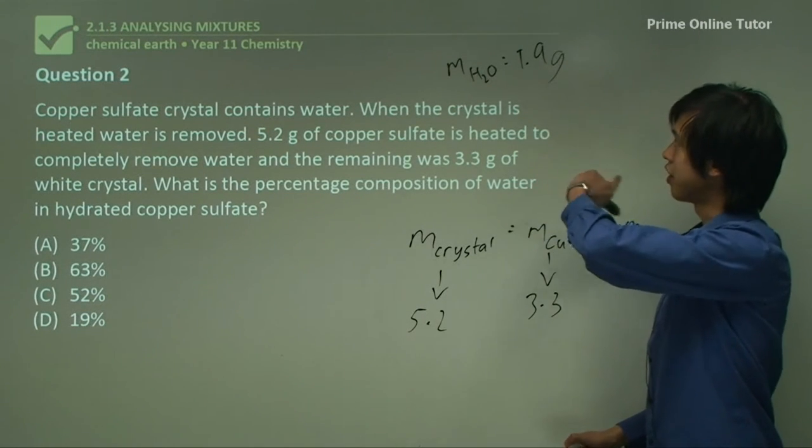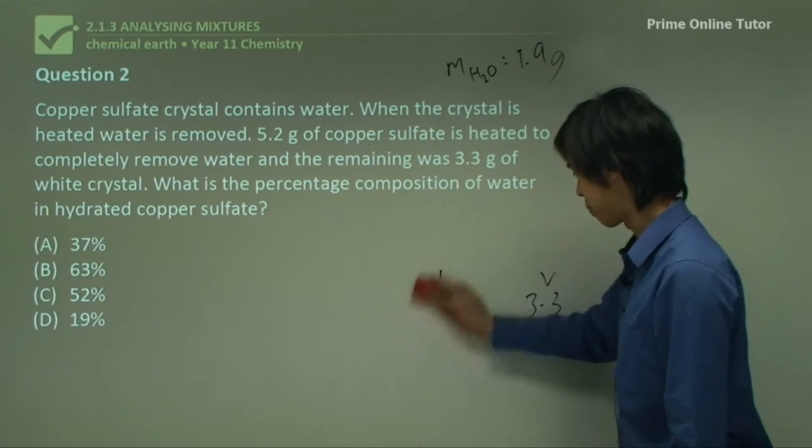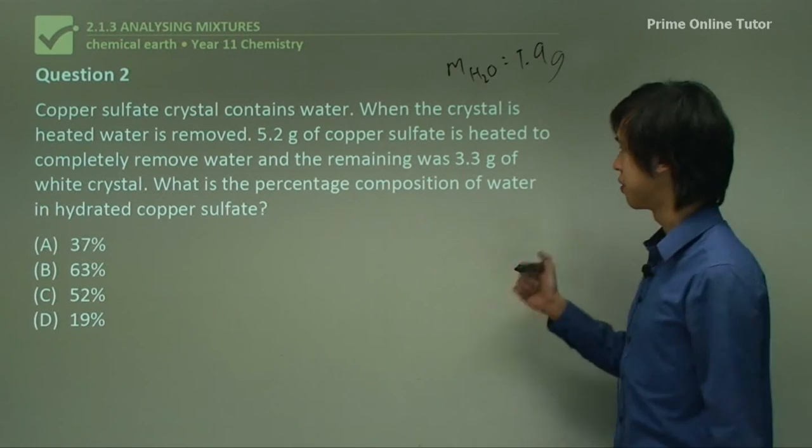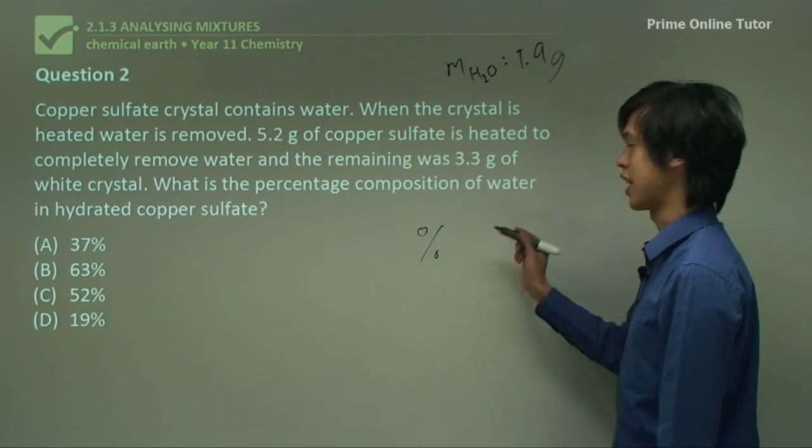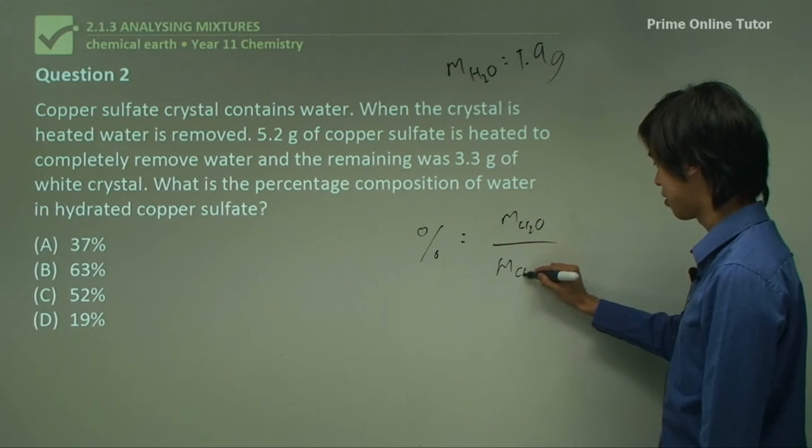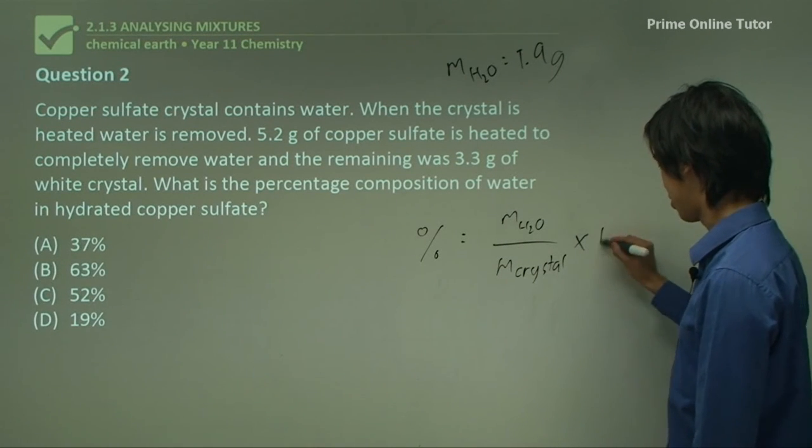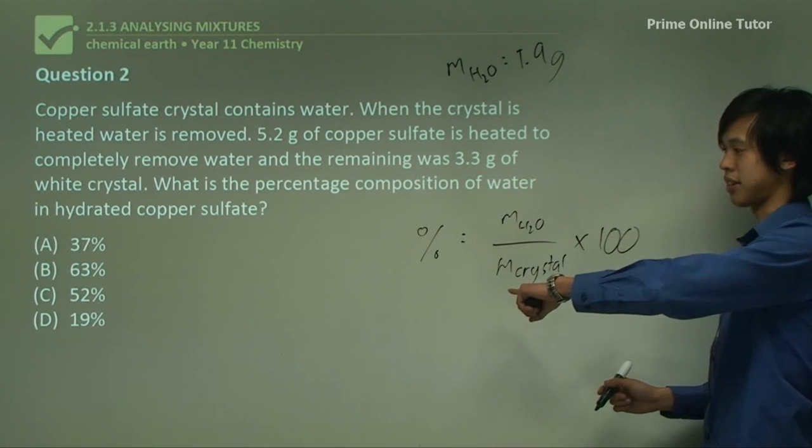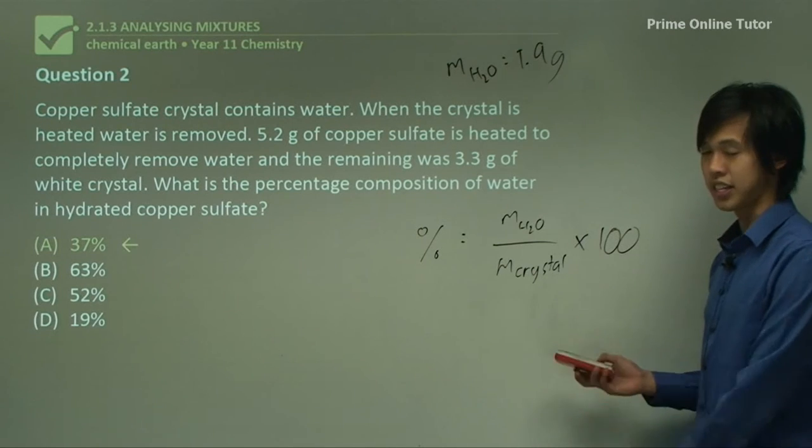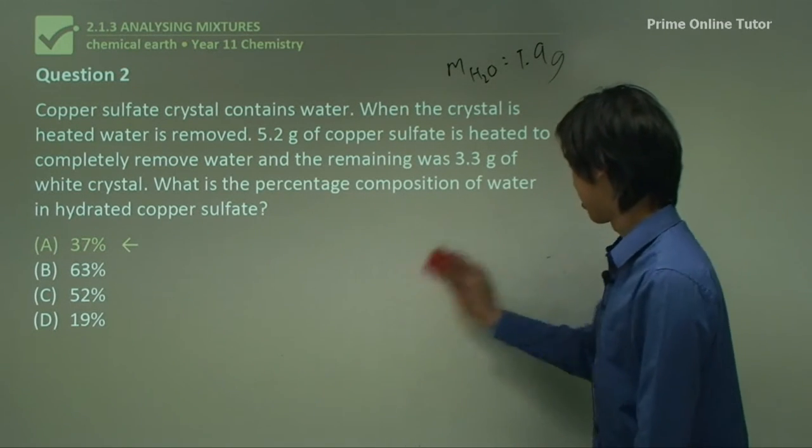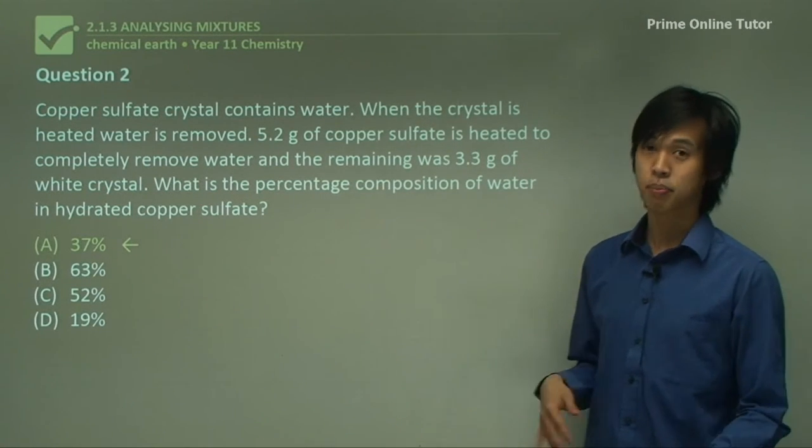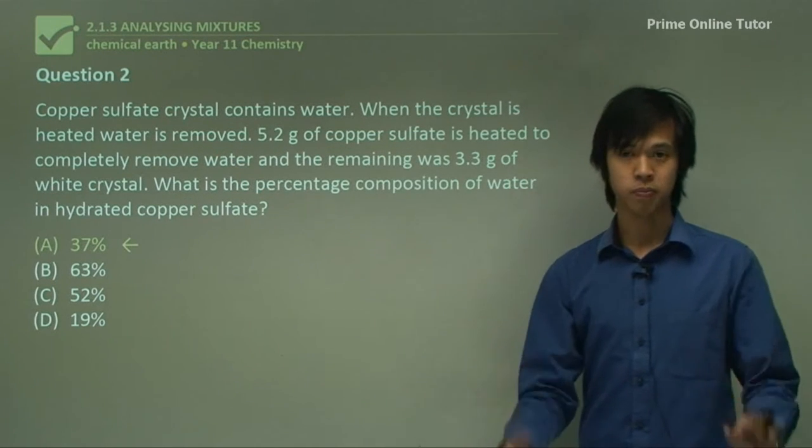So we now know the mass of the water. Now all we have to do to work out the percentage mass is divide this mass by the total mass of the crystal, so percentage mass times 100. So mH2O over m crystal times 100, and that gives us our percentage mass. And if we do the calculation, what we'll find is that the answer is 37%. So 37% of this crystal, copper sulfate, is water.